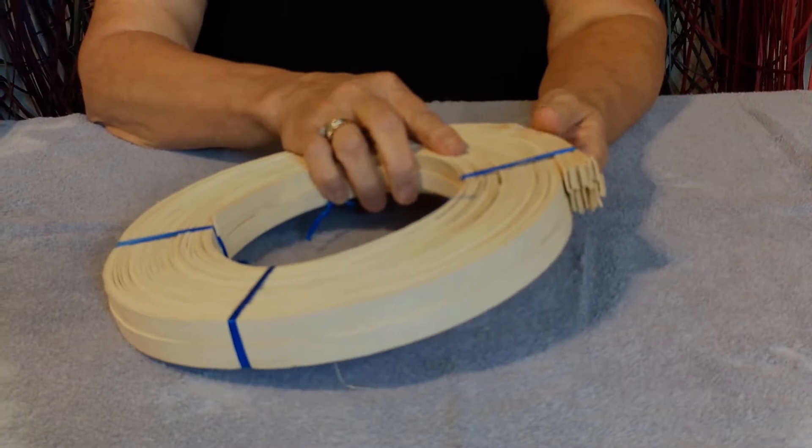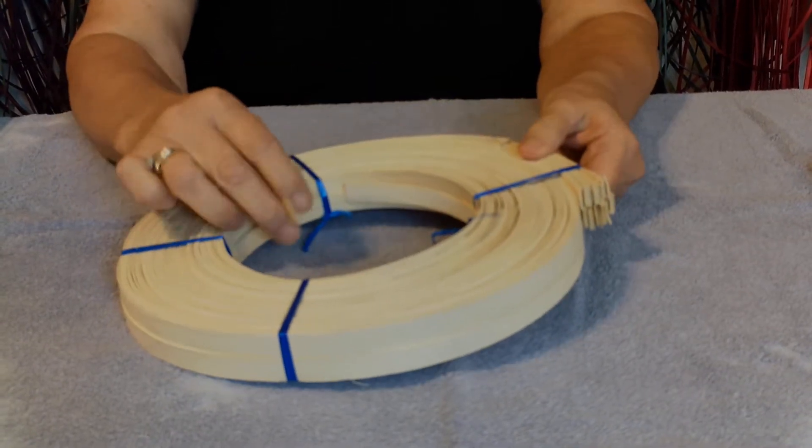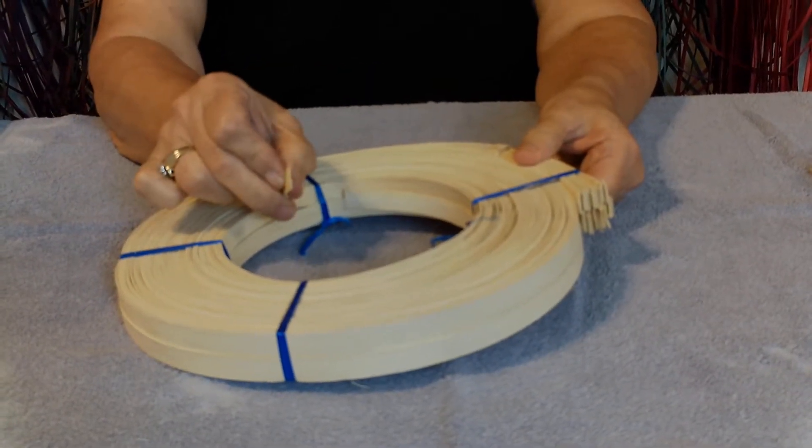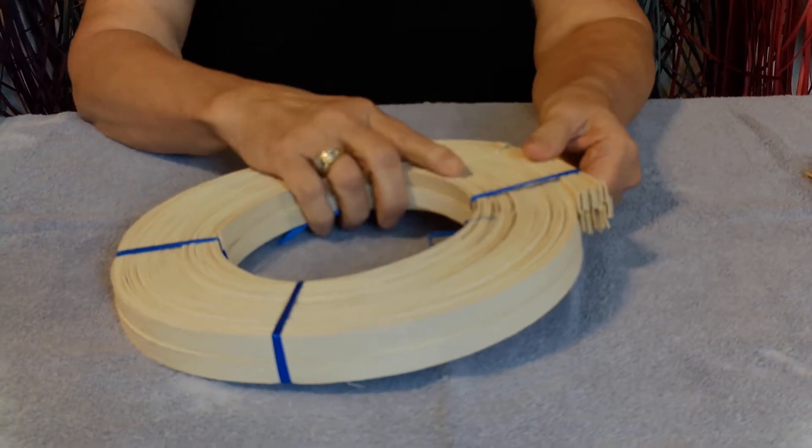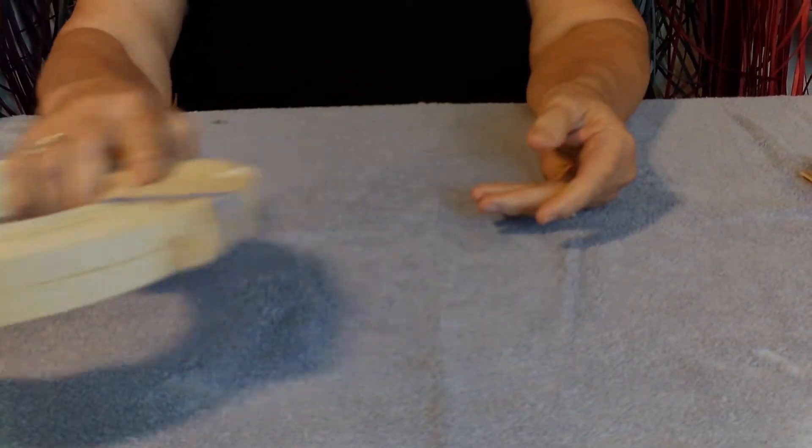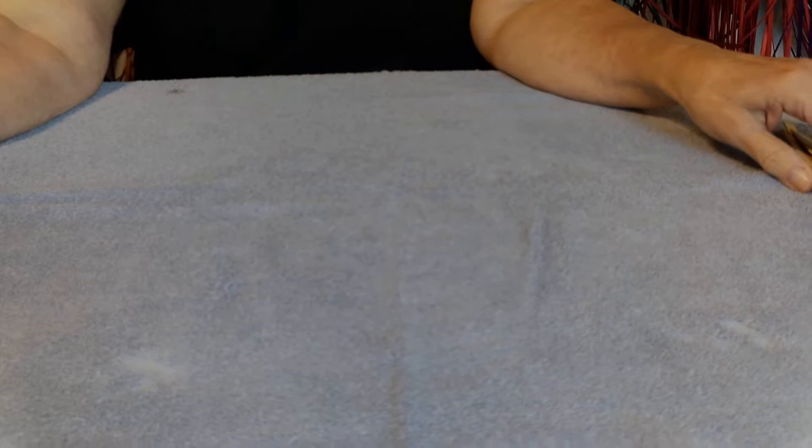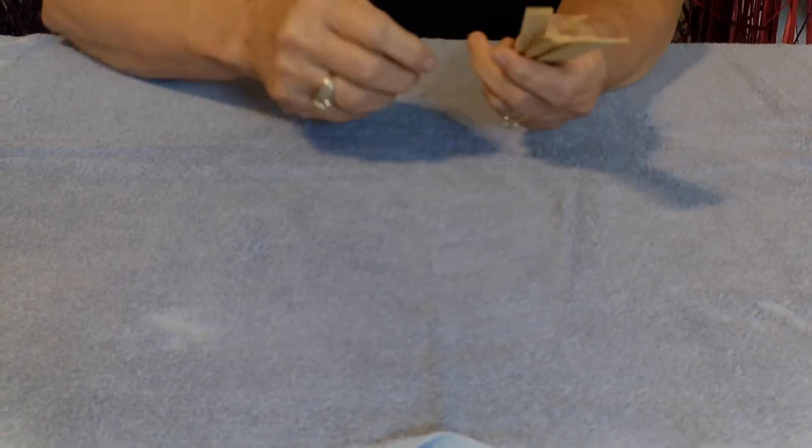Now, the flat reed is called flat flat because it's flat on both sides. I'm going to show you now the most common sizes of flat reed that we use in baskets. These are not all of the sizes, but these are the most common.